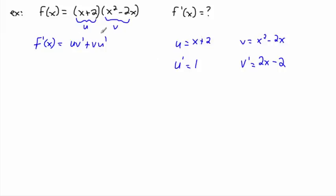So what I can do then is just say u times v prime. So f primed of x is going to be u times v prime. So x plus 2 times 2x minus 2. And all that has to be plus v u primed. So plus in this case, well u primed is just 1, so it's going to be easy. It's just plus x squared minus 2x. That was v.